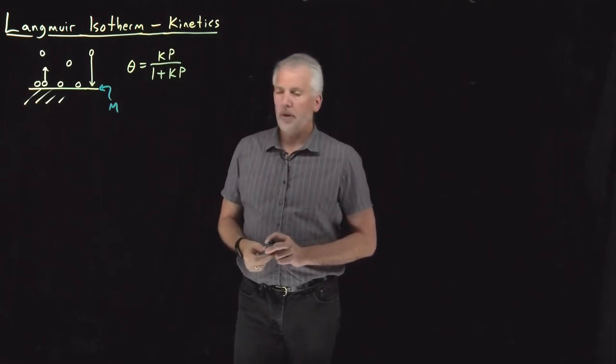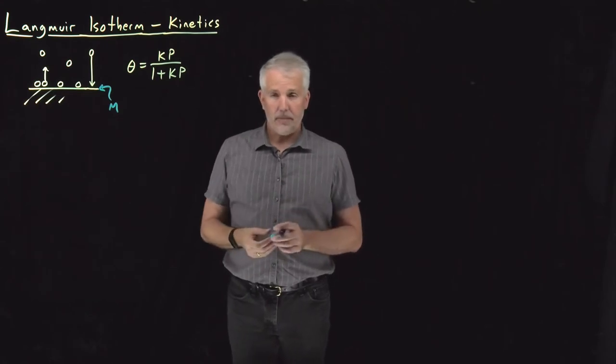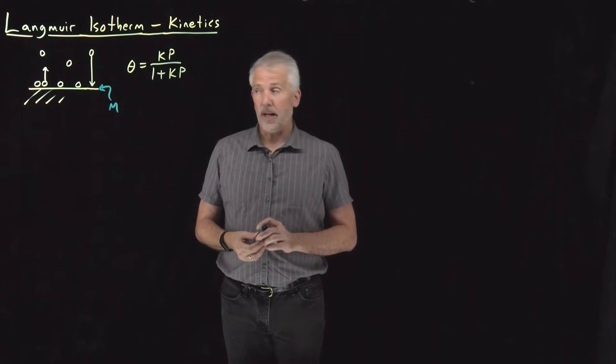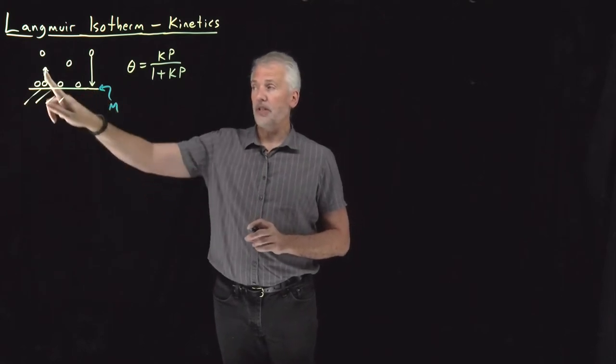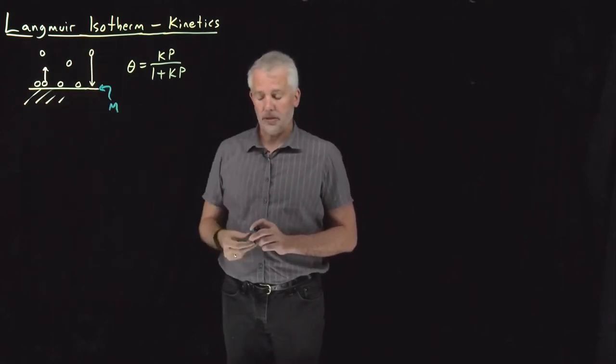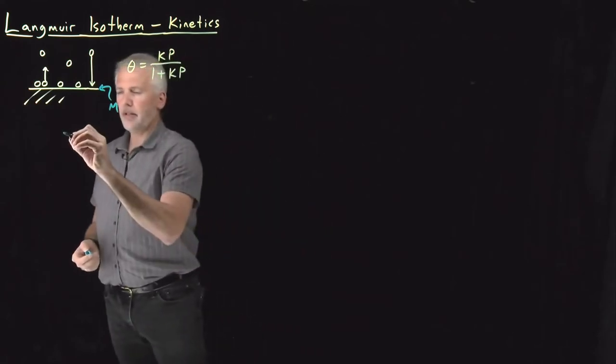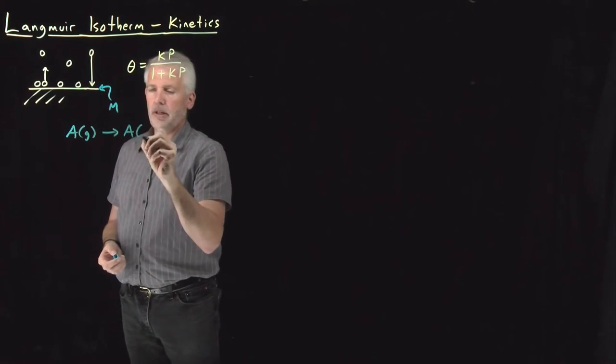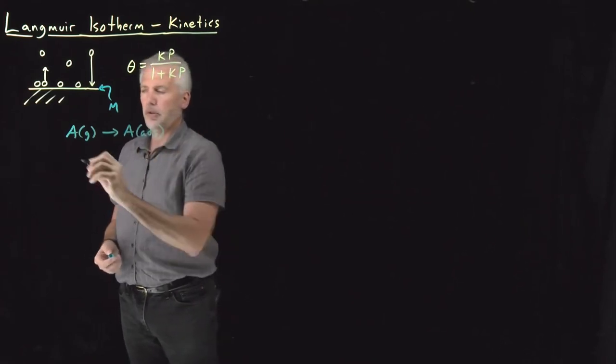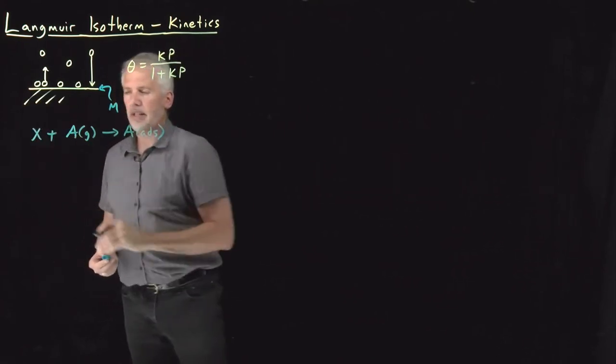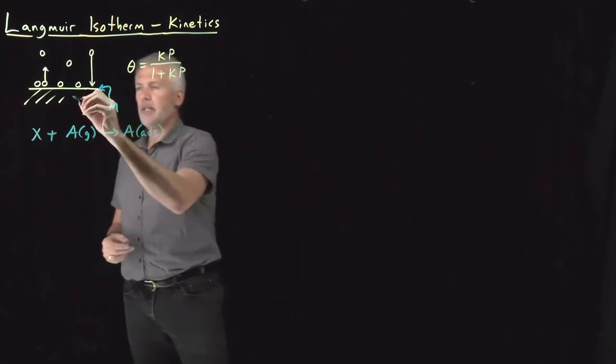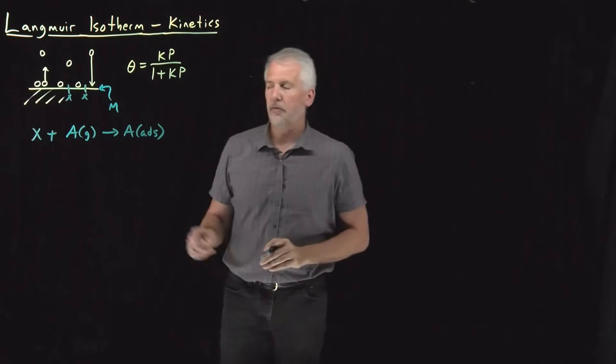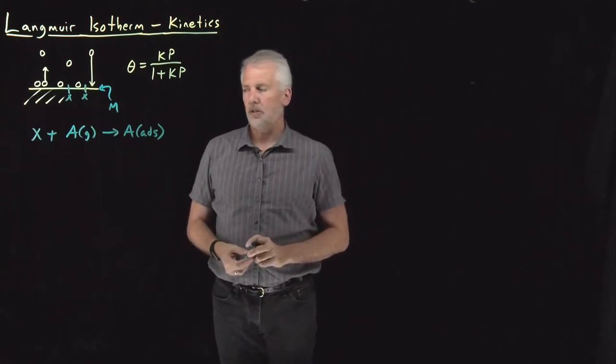So if we want to think instead about the kinetics of the reaction, how quickly molecules are desorbing off the surface or adsorbing onto the surface, we can again think of the chemical reaction that's going on. Gas phase molecules are becoming adsorbed molecules. In order to do that, they need to encounter one of these empty surface sites, a site where a molecule could adsorb onto the surface, but there's currently not a molecule adsorbed onto the surface.